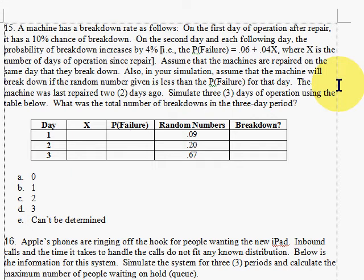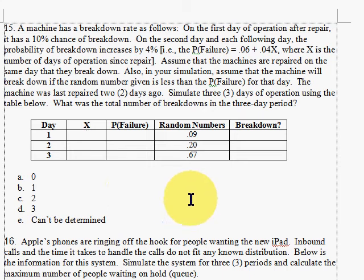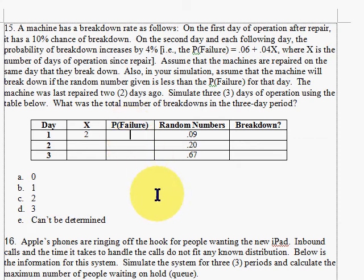The machine was last repaired two days ago, so we're on the second day, which means on our first day we have a 14% chance of the machine breaking down. Our probability of failure is based on where we are in the series — the number of days since the last repair. Since we're in our second day, the probability of failure is 0.14, and our random number is 9. Since 9 is less than 14, yes, we have a breakdown.